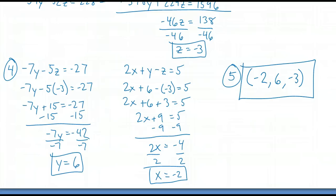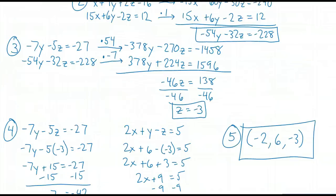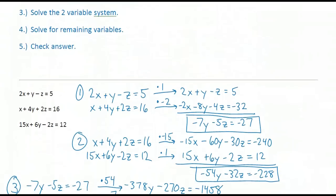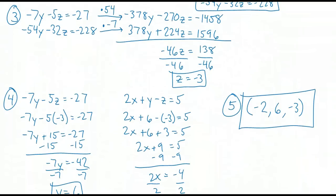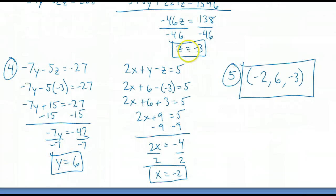To solve a three-variable system using linear combination, just like in substitution, we knock down the three-variable system to a two-variable system using linear combination — eliminating the same variable from two different sets of equations. Then we solve that two-variable system to get two variables, plug back into the original to find the third variable, and check our answer to make sure it's right.